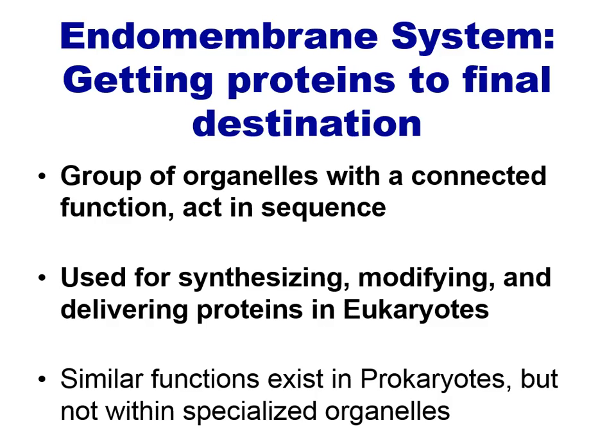The main function of the endomembrane system is to make and deliver proteins to their final destination. Proteins in the cell act as enzymes, transport proteins, signaling hormones, and a host of other functions, and making sure that they're made in the correct amounts and delivered to where they need to be is critical to the behavior of different cells.